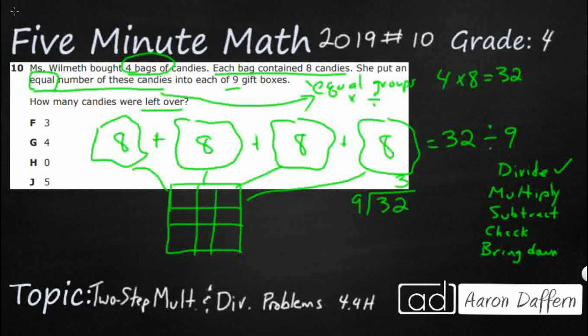Three times nine, that is going to be 27. Now we're going to subtract 32 minus 27. That's going to be five.